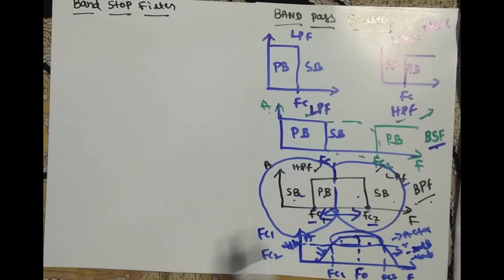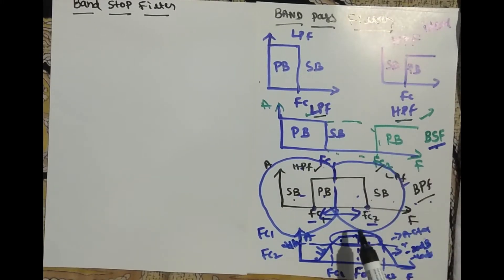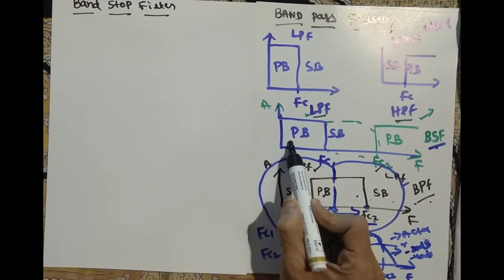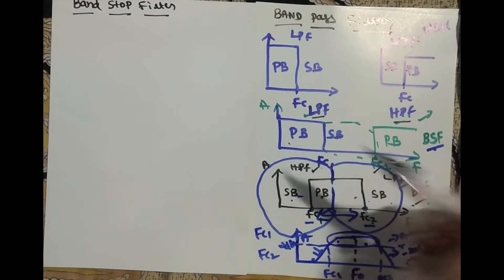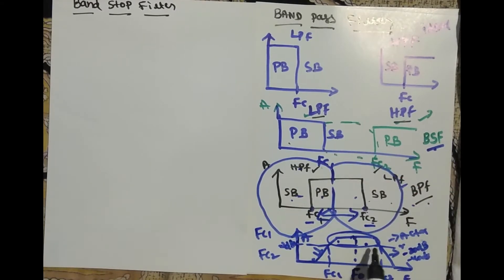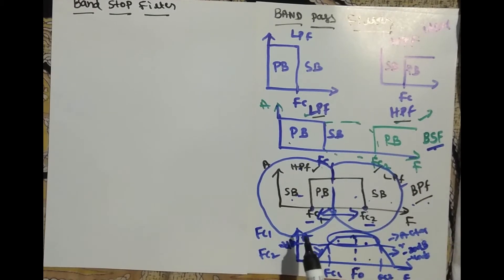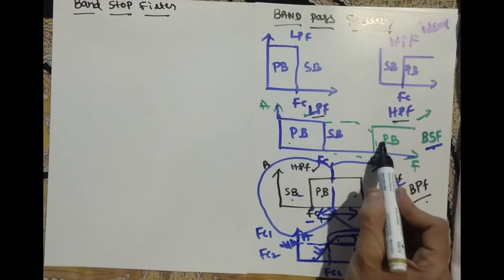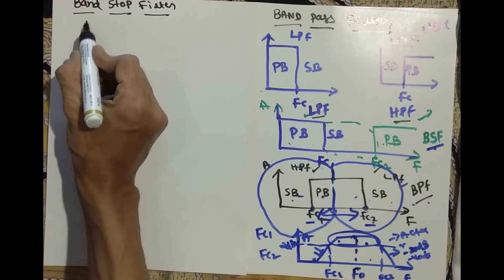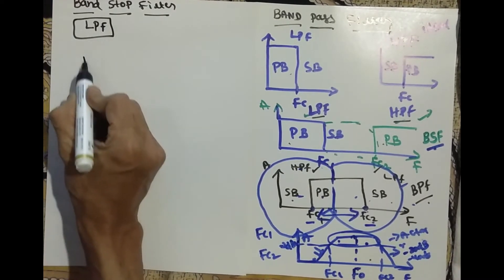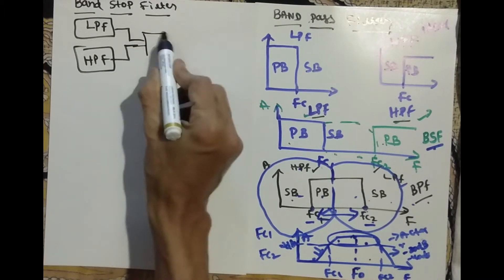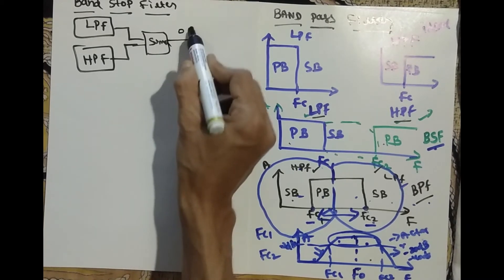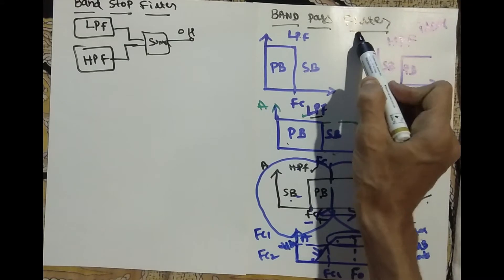For the band-stop filter, we first use a low-pass filter, then a high-pass filter. In the low-pass filter we have the pass band first, then the stop band; in the high-pass filter it is the reverse. Unlike the band-pass filter where we use series connection, in a band-stop filter we cannot use series connection because the pass bands are at opposite ends. Instead, we use a summing circuit to add the low-pass and high-pass outputs together.